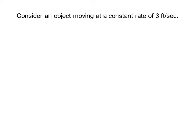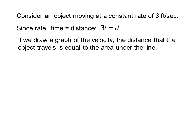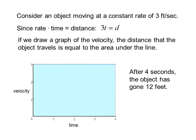Consider an object moving at a constant rate of 3 feet per second. Since rate times time equals distance, 3t equals d. If we draw a graph of the velocity, the distance that the object travels is equal to the area under the line. After 4 seconds, the object has gone 12 feet. 3 feet per second times 4 seconds equals 12 feet. So the units work out.